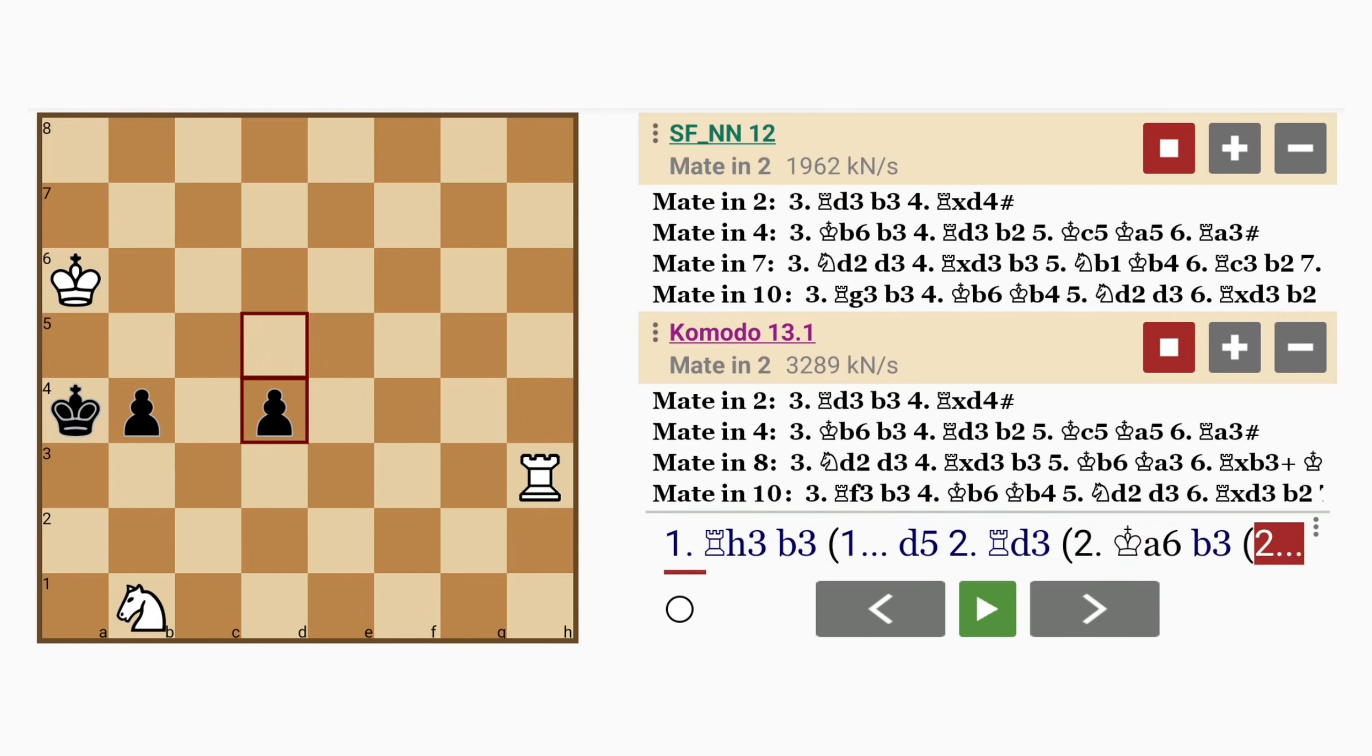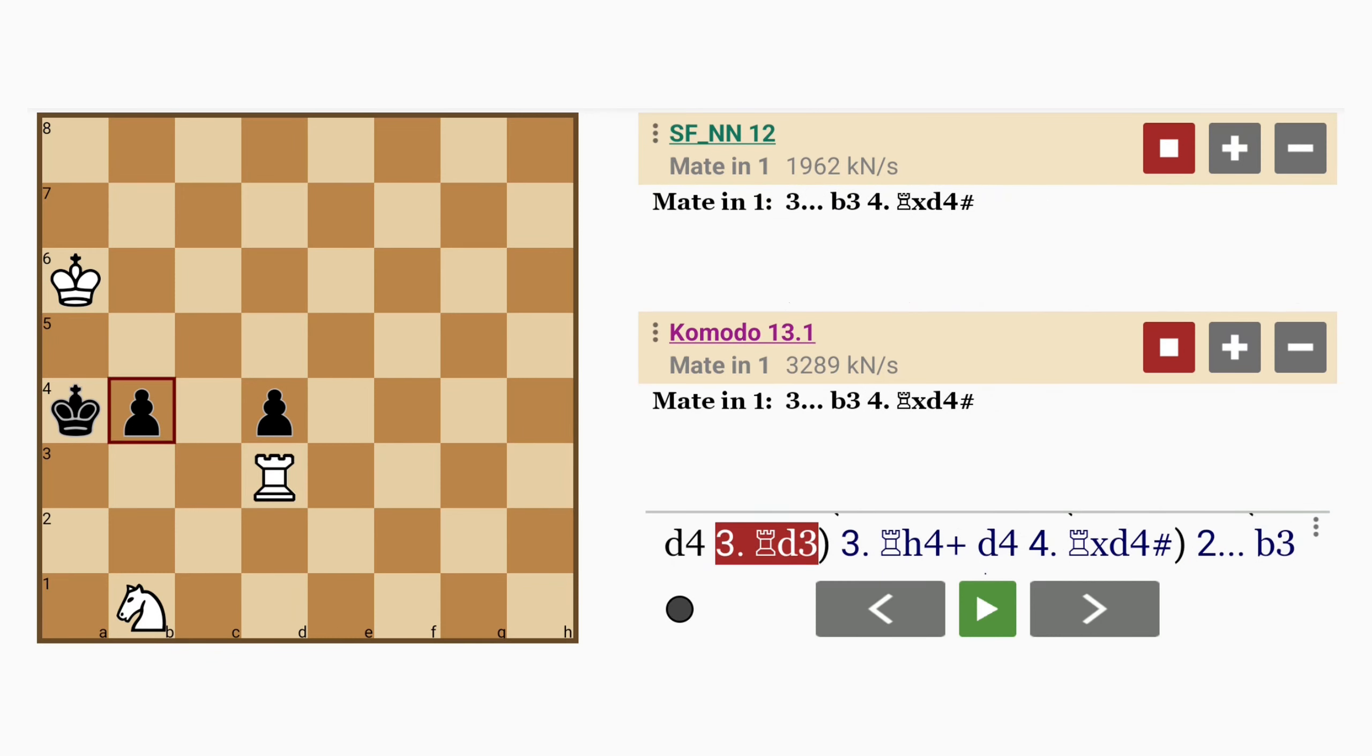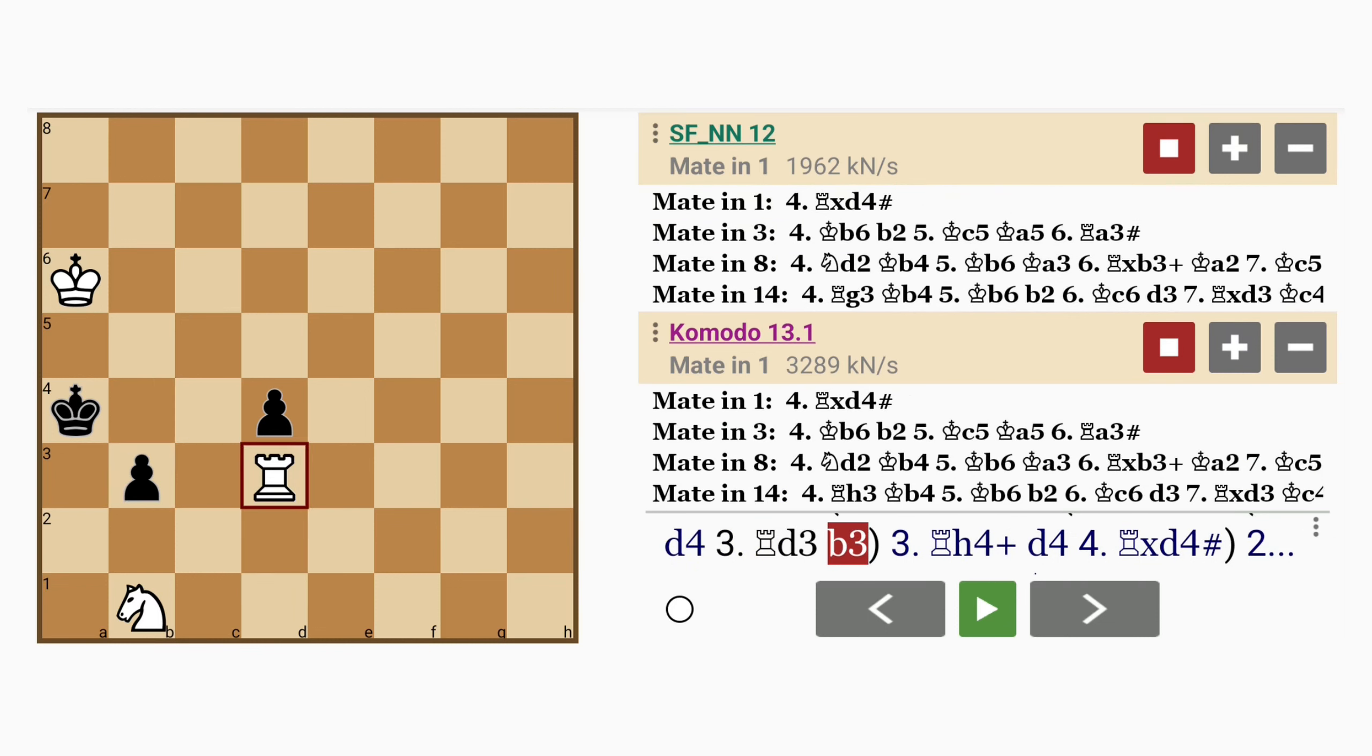And here it's important to play rook to d3 to block that d pawn, so that the b pawn has to move, followed by rook captures pawn with mate.